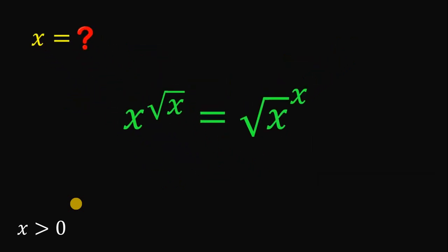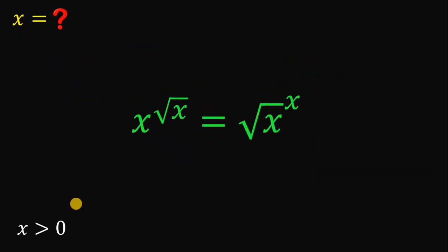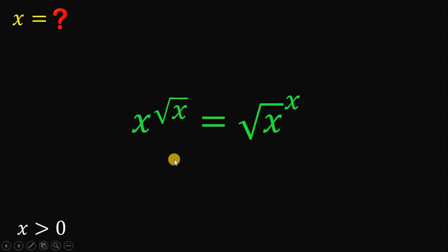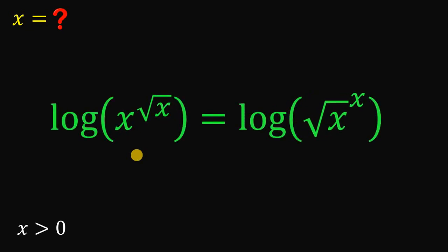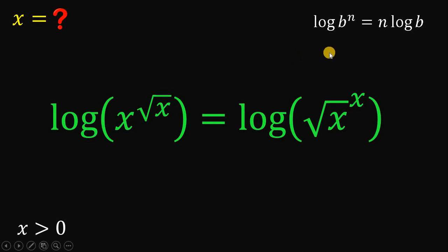Let's answer this question together. Our goal is to solve for the value of x, which is greater than 0. The first thing we need to do is take the logarithm on both sides. The reason is that we can then use the property of logarithm: if we have the logarithm of b raised to n, it is equivalent to n multiplied by the logarithm of b.